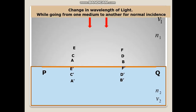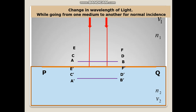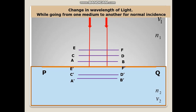Now let us talk about the change in wavelength of light when going from one medium to another for normal incidence. These are the rays coming normally on the surface PQ. This is the incident wavefront AB which gets refracted to A dash B dash C. CD goes to C dash D dash. Similarly EF goes to E dash F dash in medium 2. These are the refracted wavefront rays.